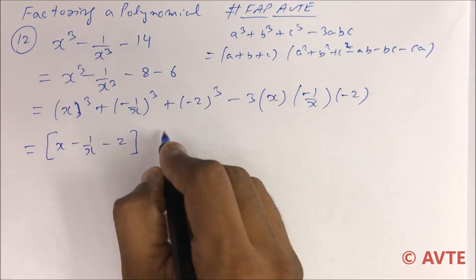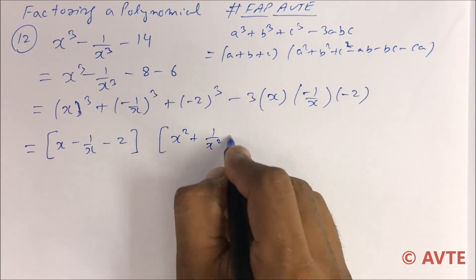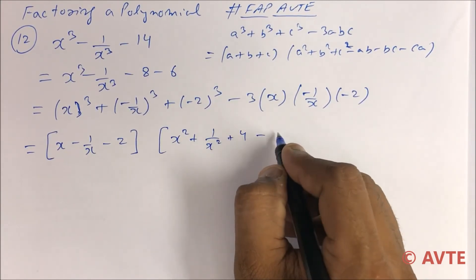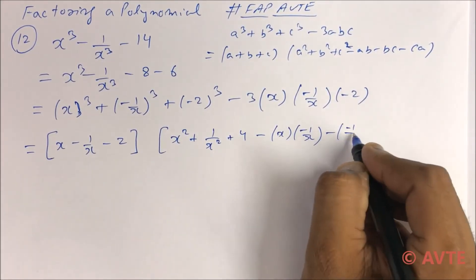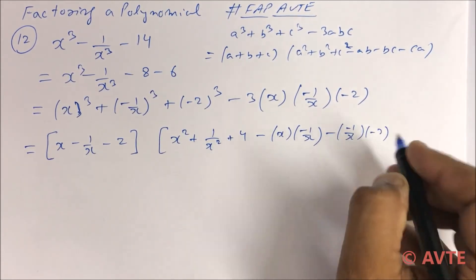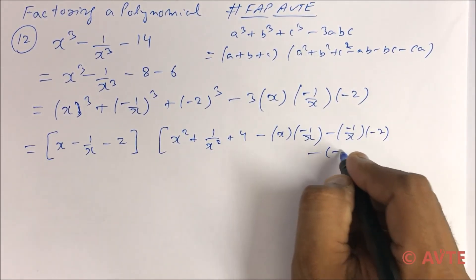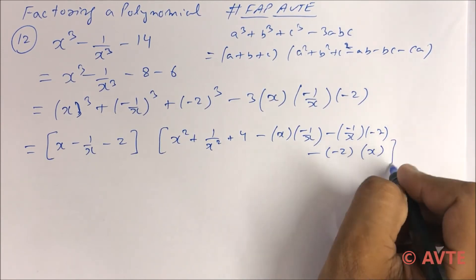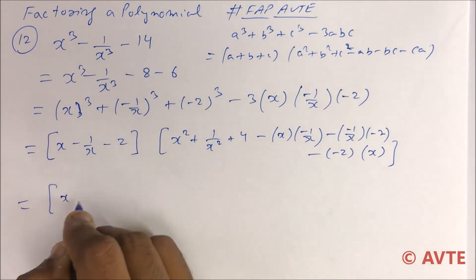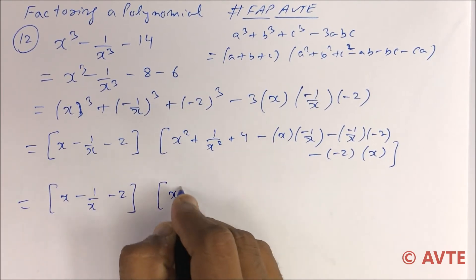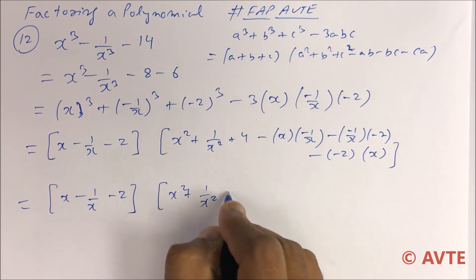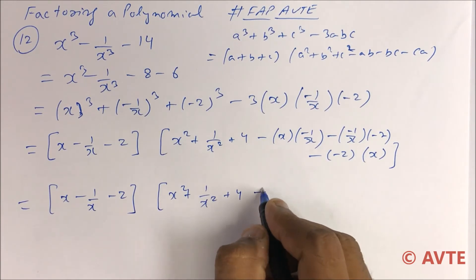b + c, a² + b² + c² - ab - bc - ca. This is x - 1/x - 2, this is +1